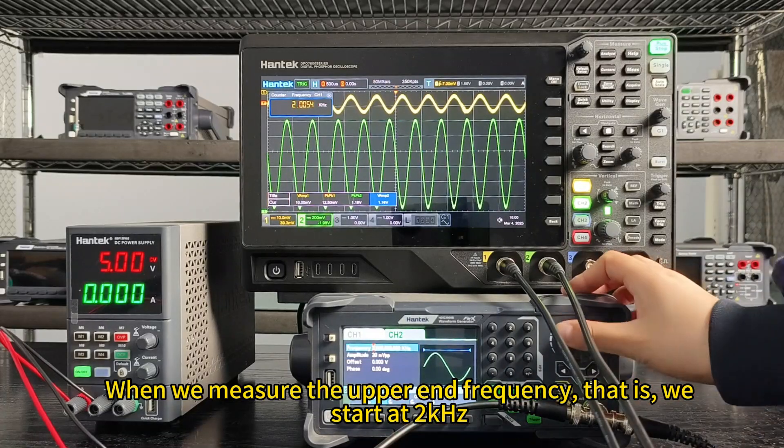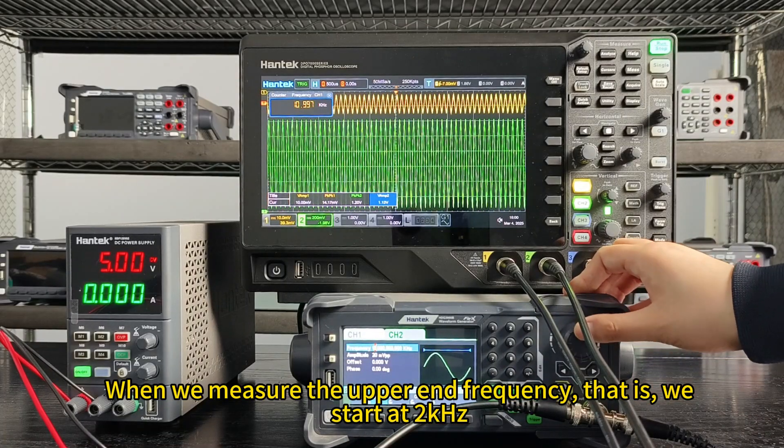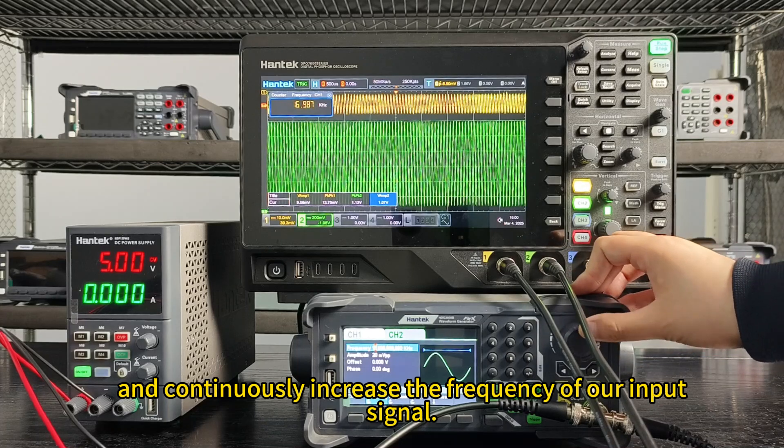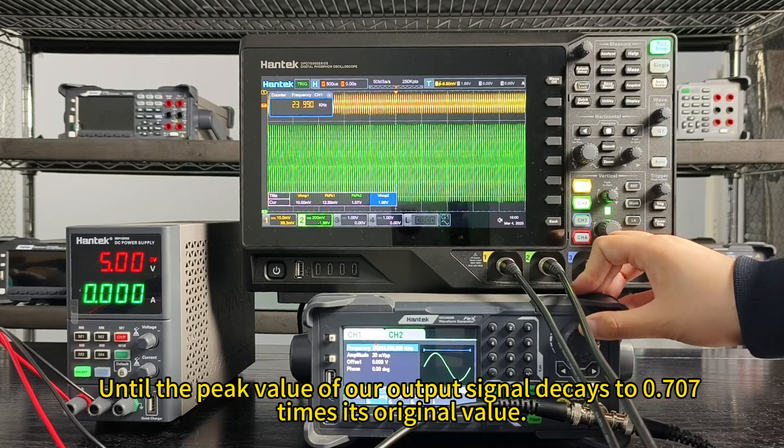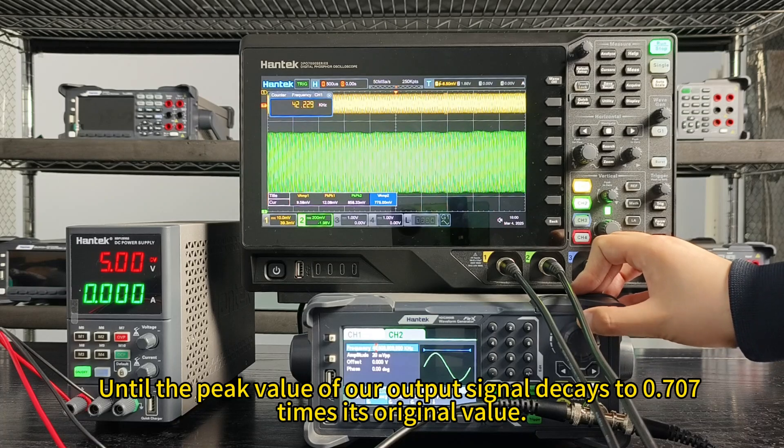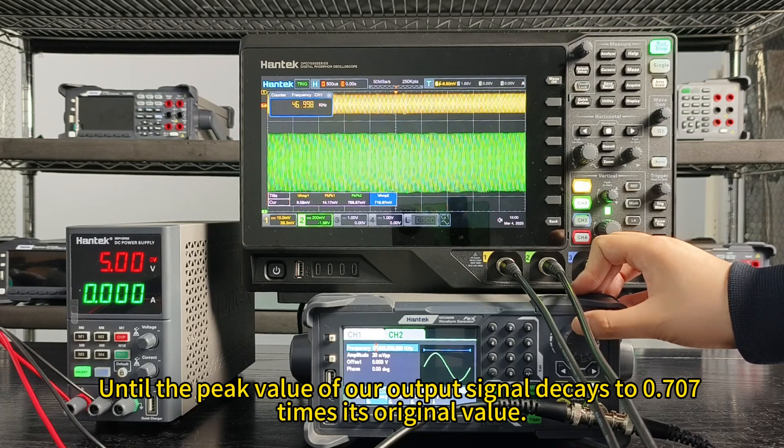When we measure the upper-end frequency, we start at 2000 hertz and continuously increase the frequency of our input signal until the peak value of our output signal decays to 0.707 times its original value.